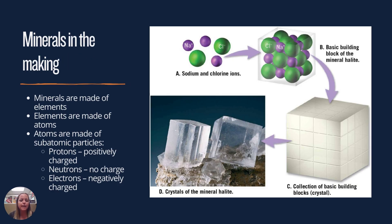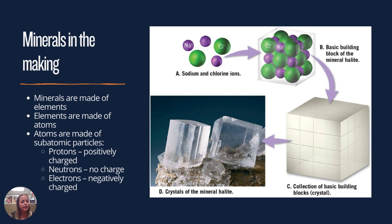Minerals are made up of elements — you remember the periodic table of elements. All of those elements can combine in different fashions to create different minerals. For example, halite is made up of sodium and chlorine ions, NaCl, and it's basically table salt. Elements are made up of atoms, and the atoms within the elements are made from subatomic particles: protons, neutrons, and electrons. Protons are positive, neutrons have no charge, and electrons are negatively charged.